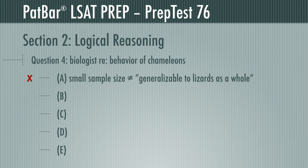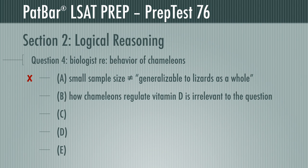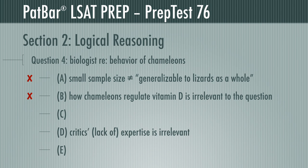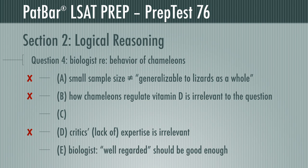The biologist says critics doubt the results of the report, but not specifically why. The question wants you to find the flaw in the biologist's argument, not the study. How chameleons regulate vitamin D production is irrelevant. Since anyone can suggest a flaw with a study, it's the evidence in support — not your credentials — that will ultimately bear out. The critics' expertise, or lack thereof, is irrelevant. E is just wrong. By suggesting it's good enough that the study's author is well-regarded, the biologist doesn't hold the author to a higher standard — quite the opposite.